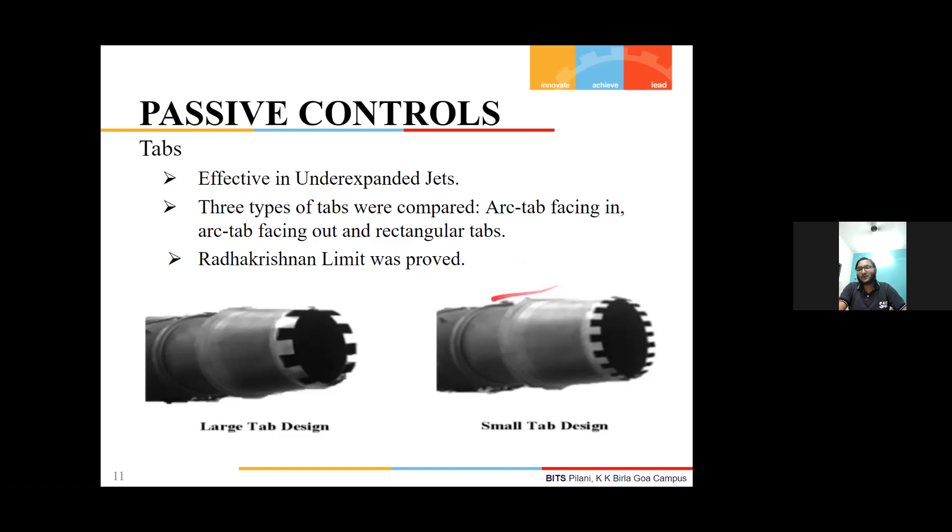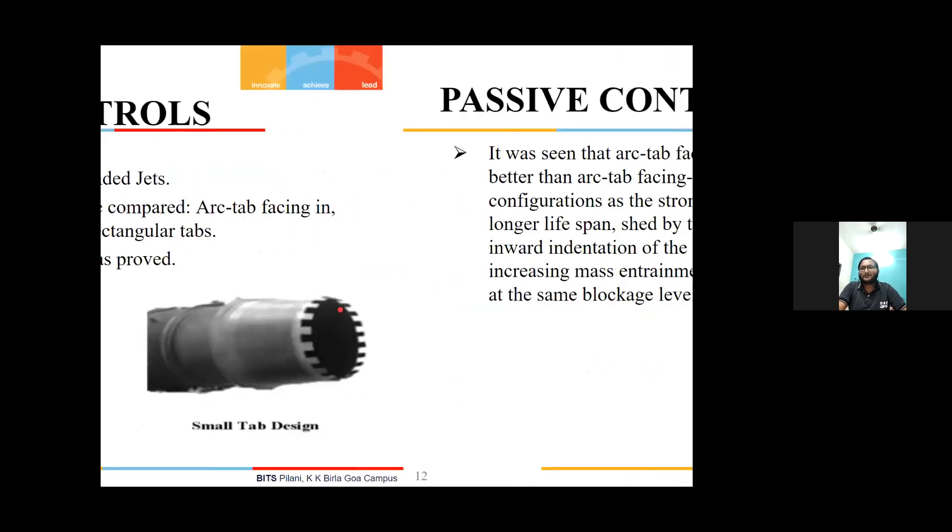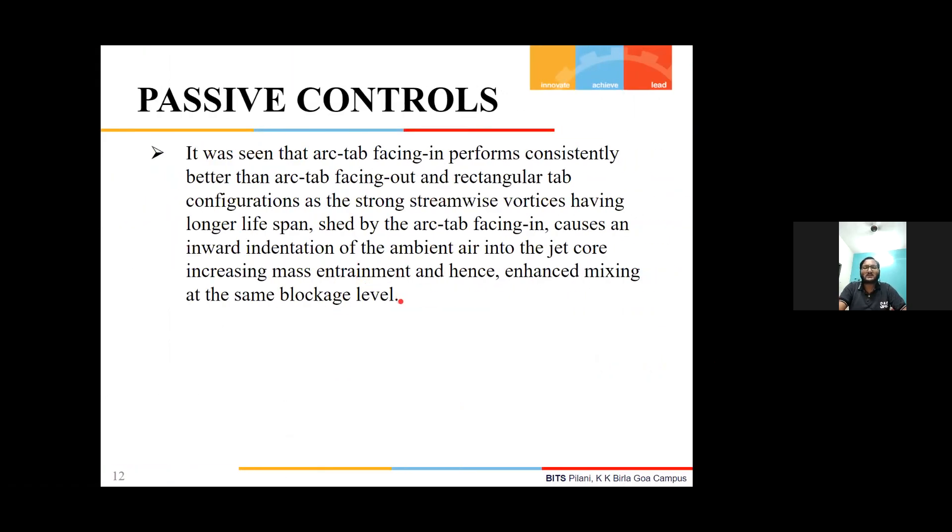Here we can see some large tab and small tab designs. These are basically made by removal of material from the throat of the nozzle. It was seen through experiments that arc tab facing in performs consistently better than arc tab facing out or rectangular tab configurations, as strong streamwise vortices were made which cause an inward indentation of the ambient air inside the jet core, enhancing mixing.